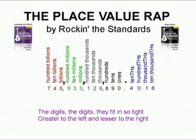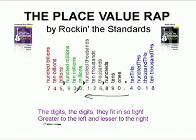The digits, the digits that fit in so tight. Greater to the left and lesser to the right. When we say that the digits fit in so tight, we're saying that you can't leave empty spots where there are no numbers. These numbers get worth more — greater — as we go to the left. So the three here is worth more than the three there, and they're worth less as we move over to the right.